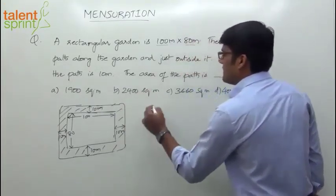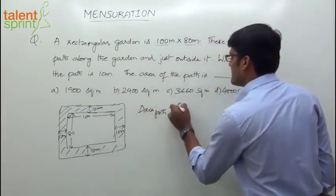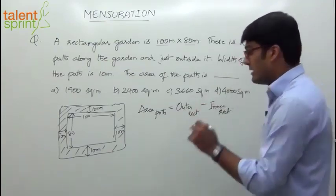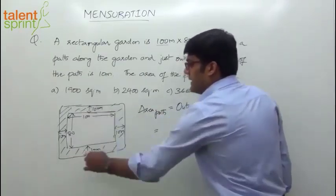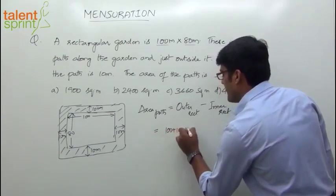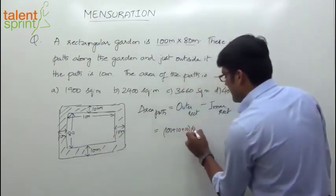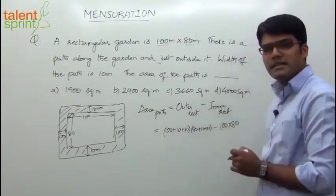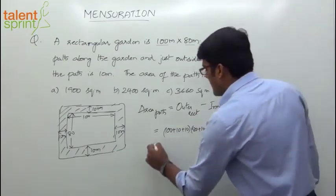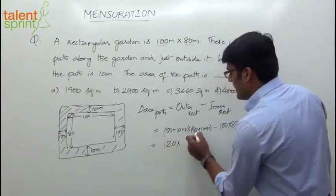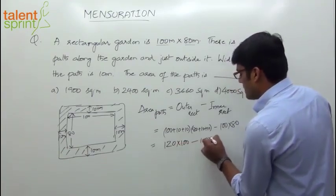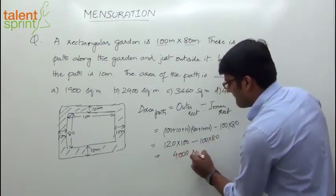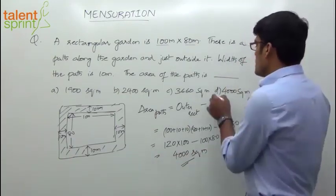So the area of the path equals outer rectangle minus inner rectangle. Area of the outer rectangle is length into breadth: length is 100 plus 10 plus 10, into breadth 80 plus 10 plus 10. Minus inner rectangle area, which is 100 into 80. Simplifying: 120 into 100 minus 100 into 80, which is 12,000 minus 8,000, equal to 4,000 square meters — the area of the shaded region, which is option B.